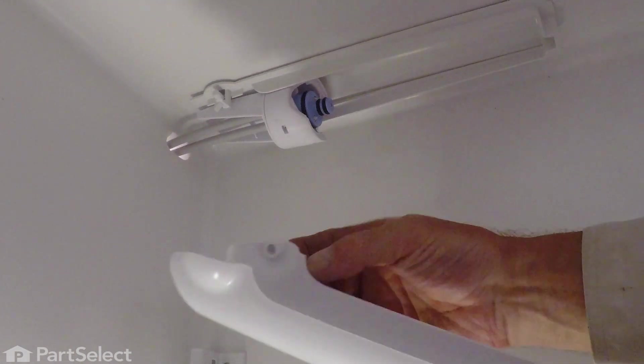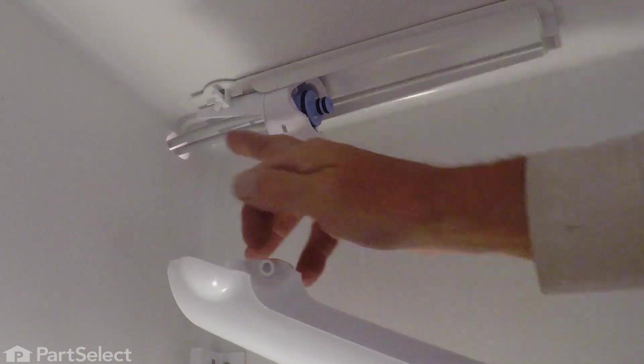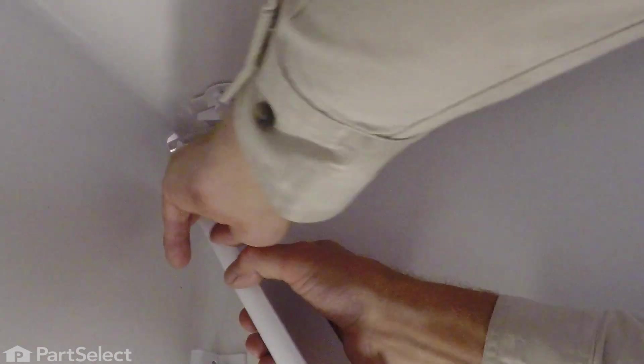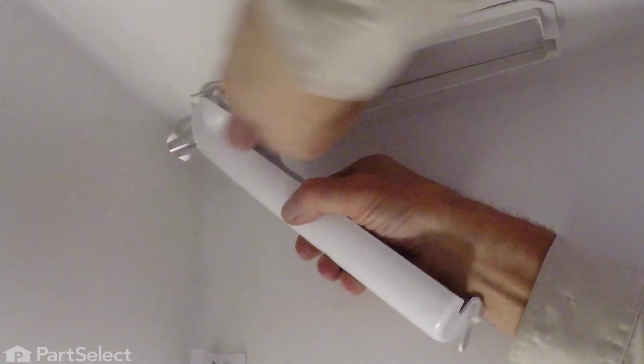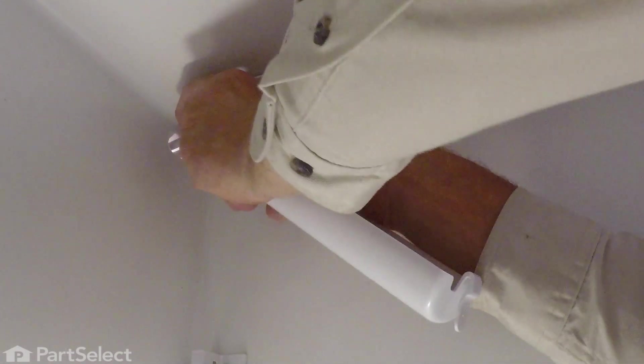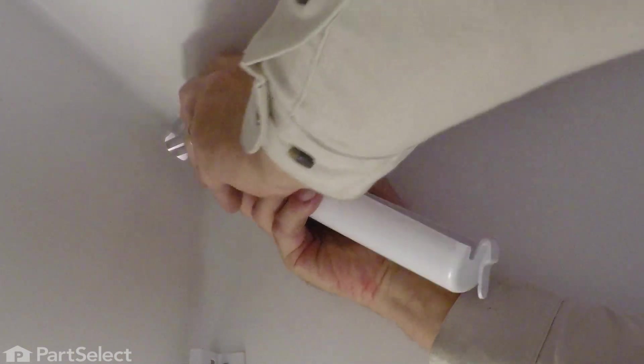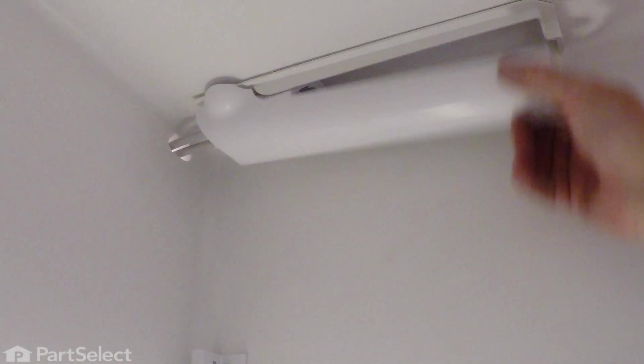We're going to engage this hole or cap over the end of that pin that went through on the right-hand side. And just flex it enough. Then we'll get the opposite side in. That should pivot easily.